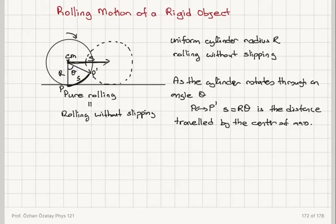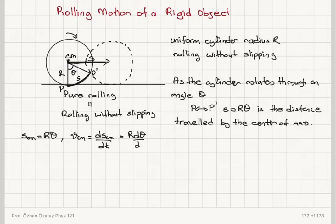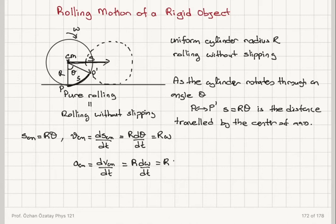Since this is a uniform cylinder, the center of mass is right in the middle by symmetry. Since the center of mass has a displacement R·theta, we can find the velocity of the center of mass: it's the distance traveled per unit time, ds/dt = R·dθ/dt = R·ω. And the acceleration of the center of mass is dv_cm/dt = R·dω/dt = R·α.